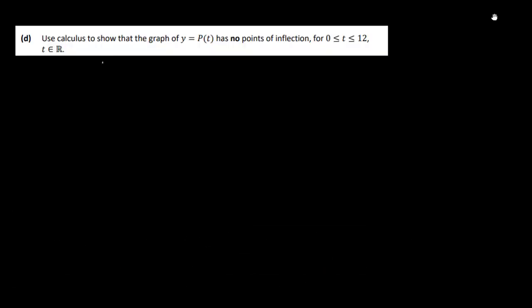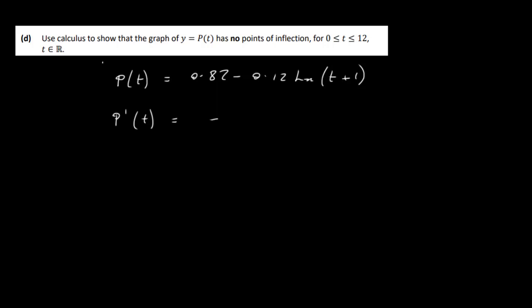Use calculus to show that the graph of y = p(t) has no points of inflection for t between 0 and 12. To find a point of inflection, you differentiate twice. Our original function is p(t) = 0.82 − 0.12 log(t + 1), and we already found the first derivative: p′(t) = −0.12 / (t + 1).